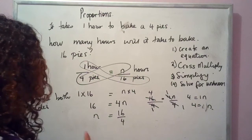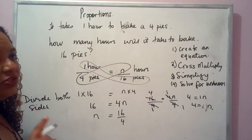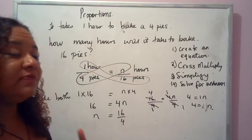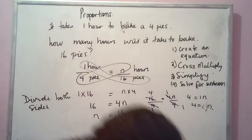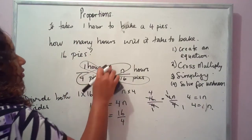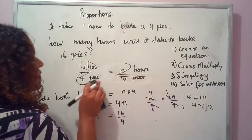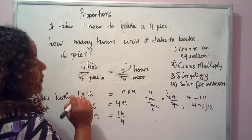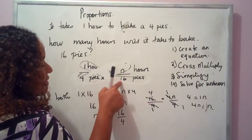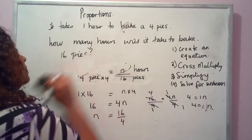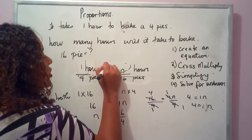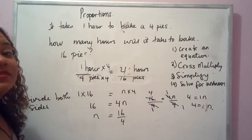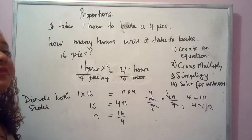There is another way you could have done this using the equivalent fractions approach. Whatever was done on the bottom was also done on the top. Four multiplied by something equals 16, and four by four is 16. So you multiply one by four to get four hours. It's essentially the same thing — you can look at both methods to see which one you prefer.